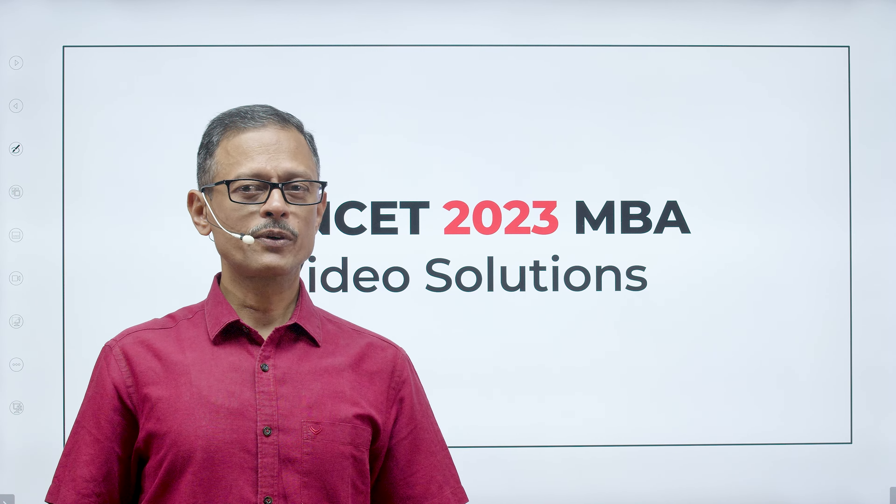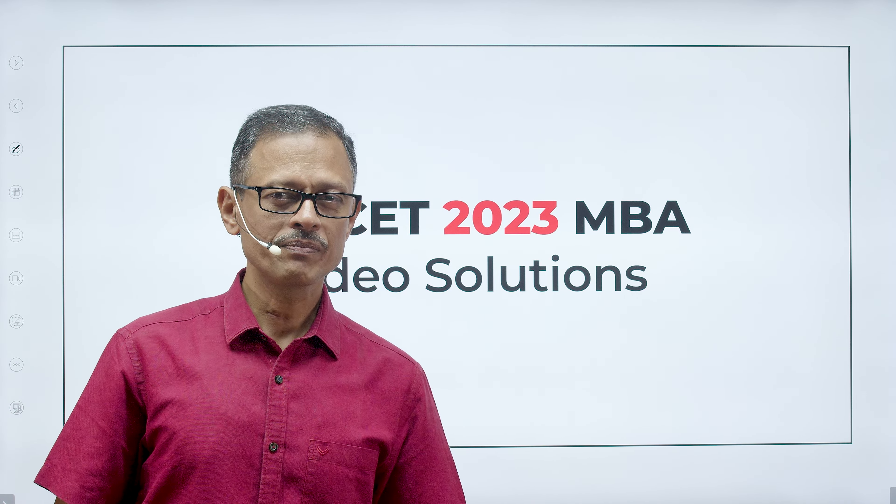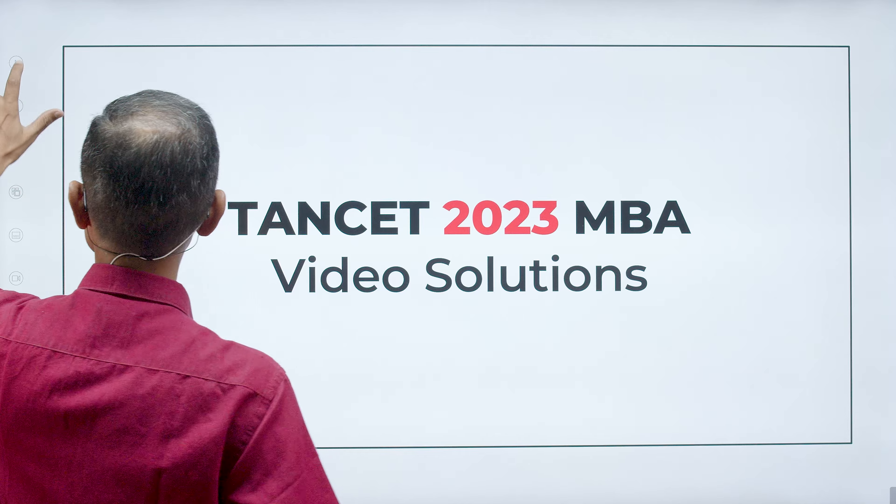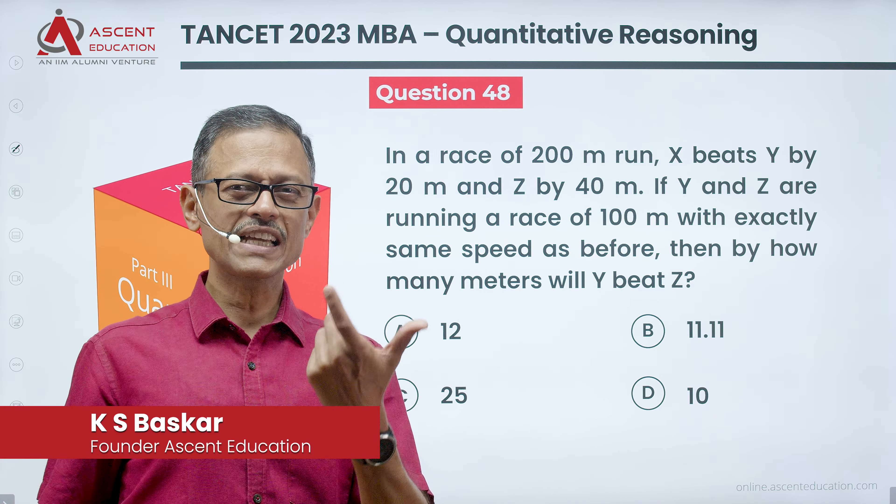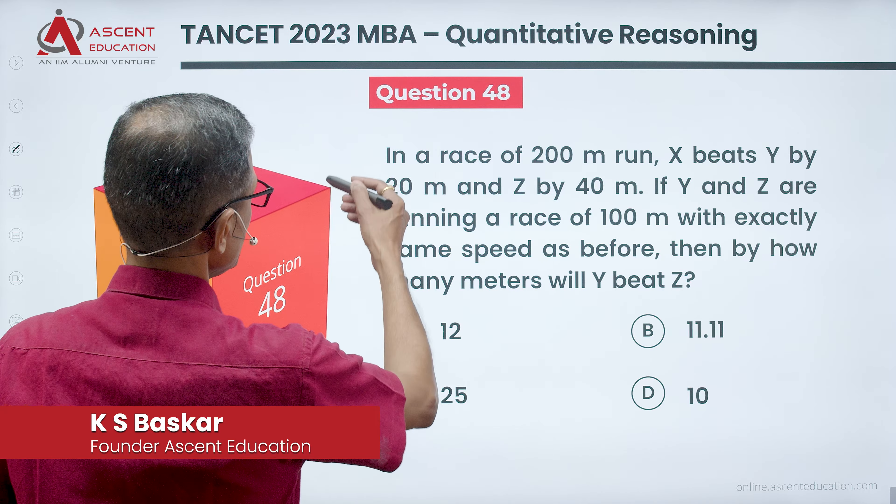TANCET 2023 MBA question paper, Aptitude section video solution. Question number 48. This is a race concept problem. It's a very simple question. There is some calculation but it is definitely doable.